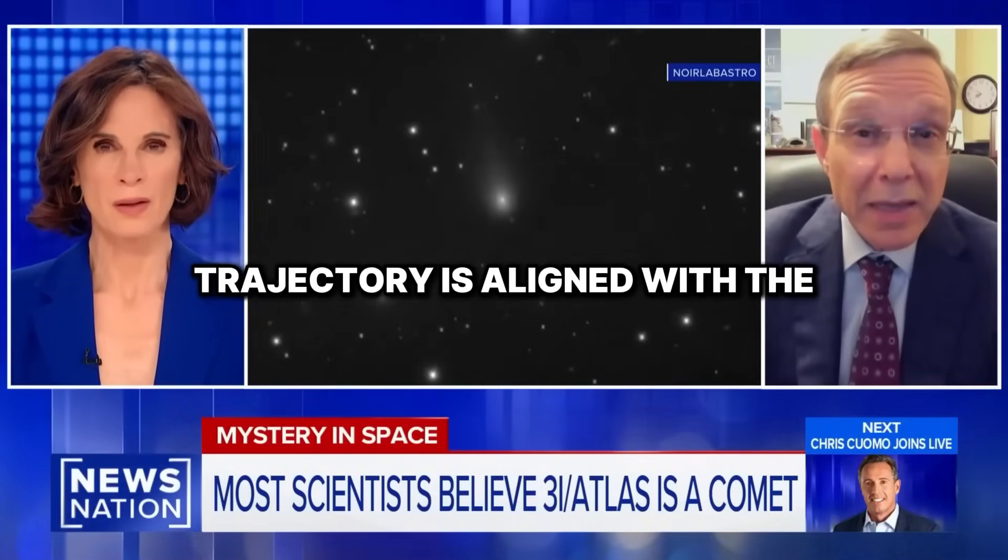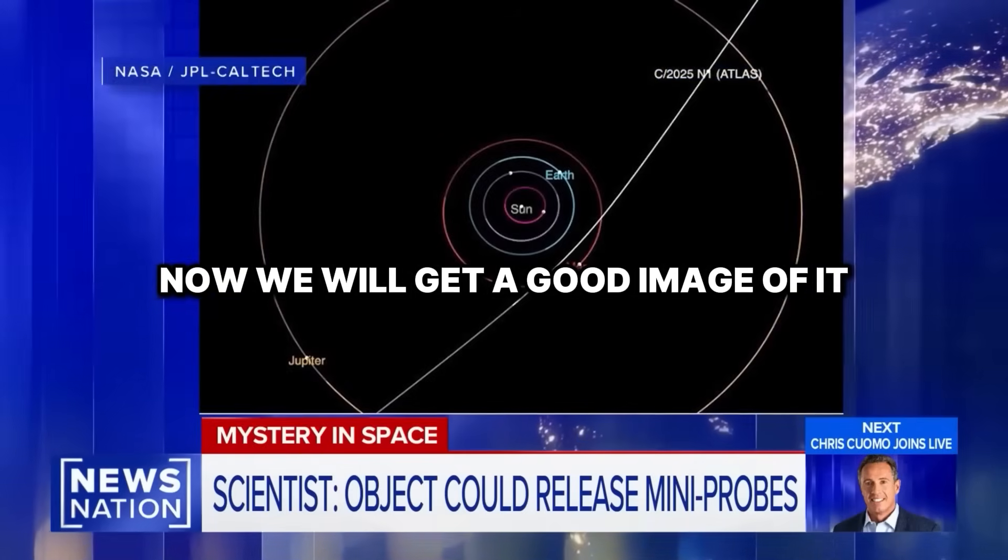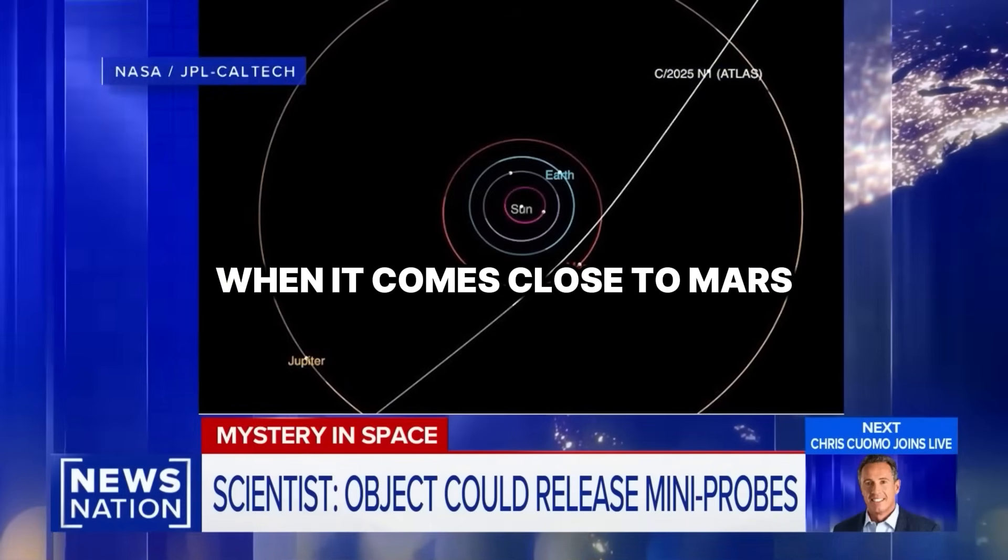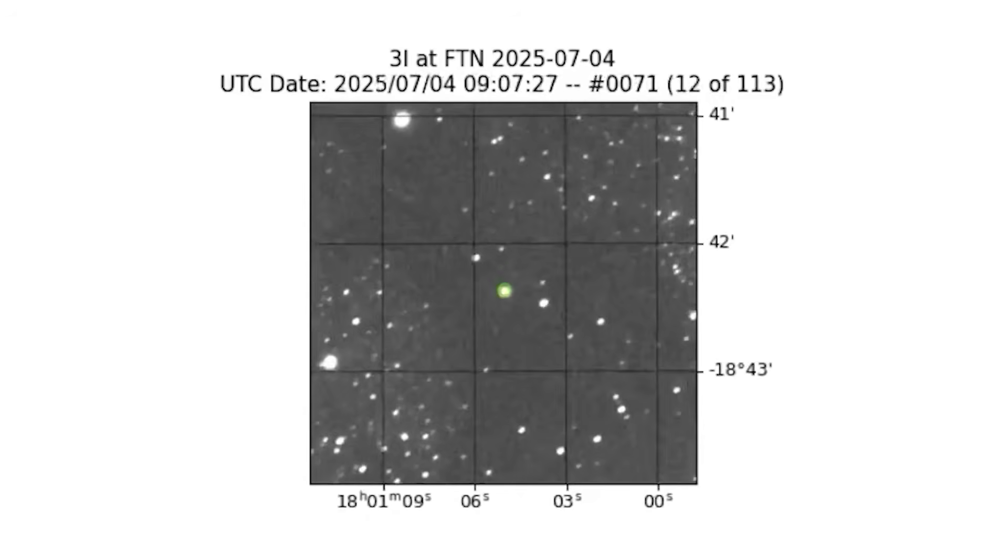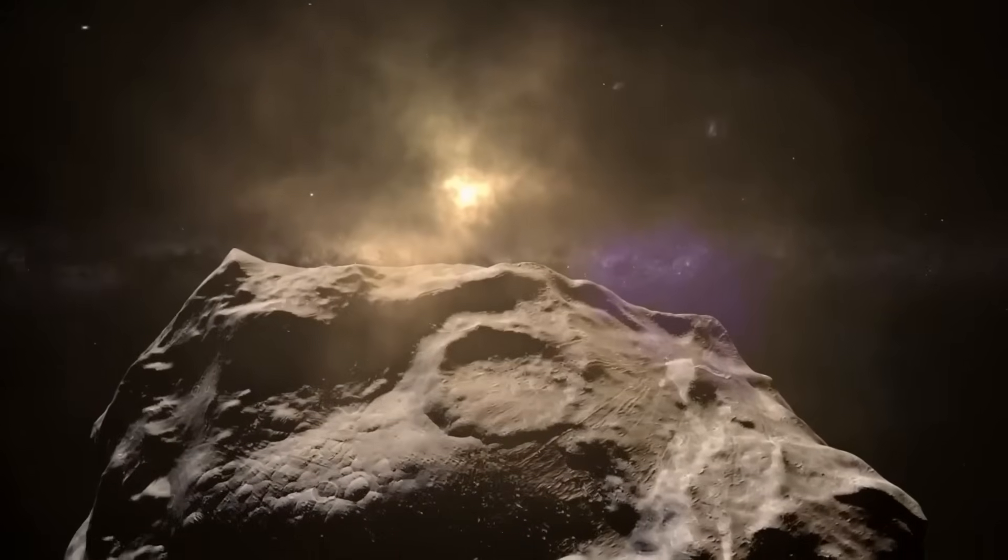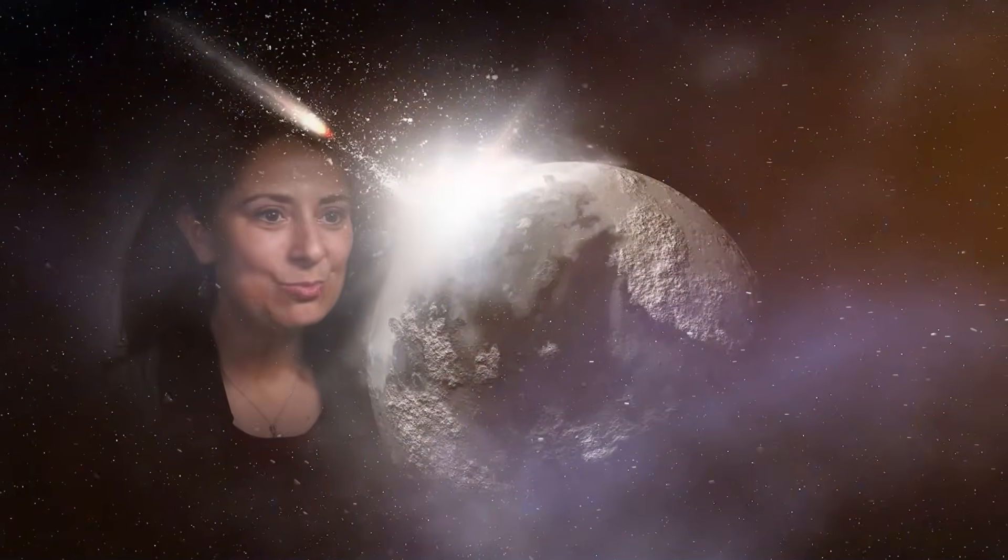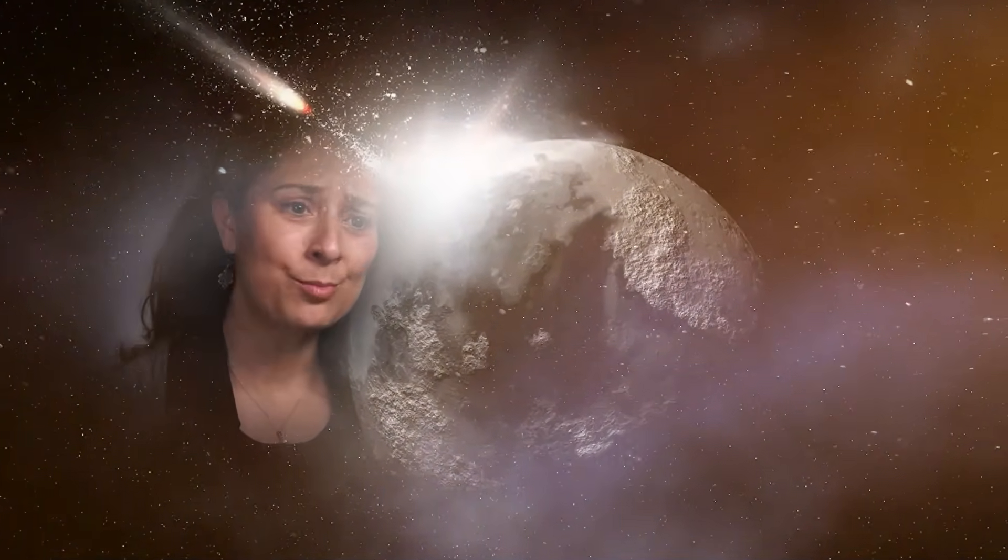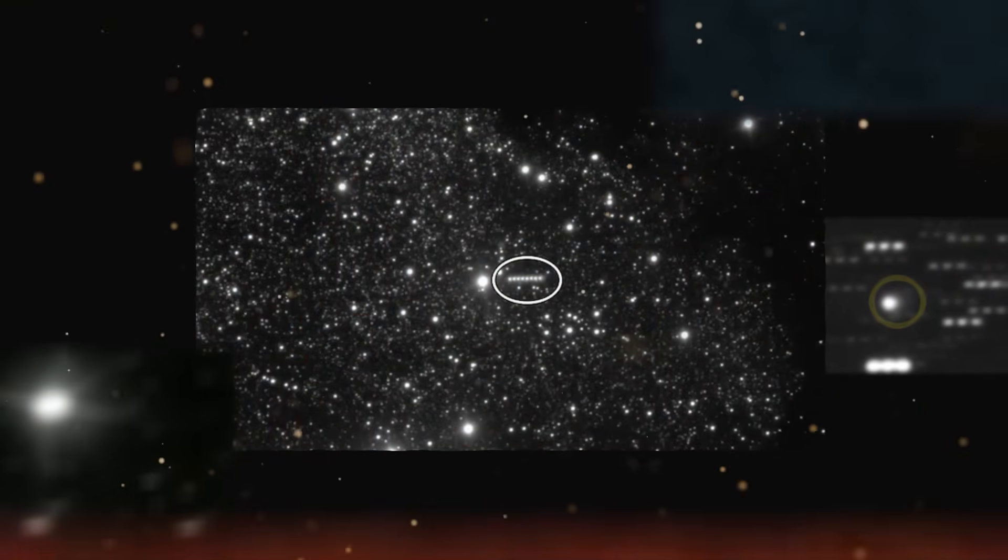What we saw instead has sent a shock wave through the astronomical community. Trajectories aligned with the plane of the planets around the sun. We will get a good image of it when it comes close to Mars on October 3rd. It's not just about its speed, it's about what it's made of. This object is a cosmic freak, an anomaly so profound that it forces us to ask a terrifying question. What else is lurking in the darkness between stars?